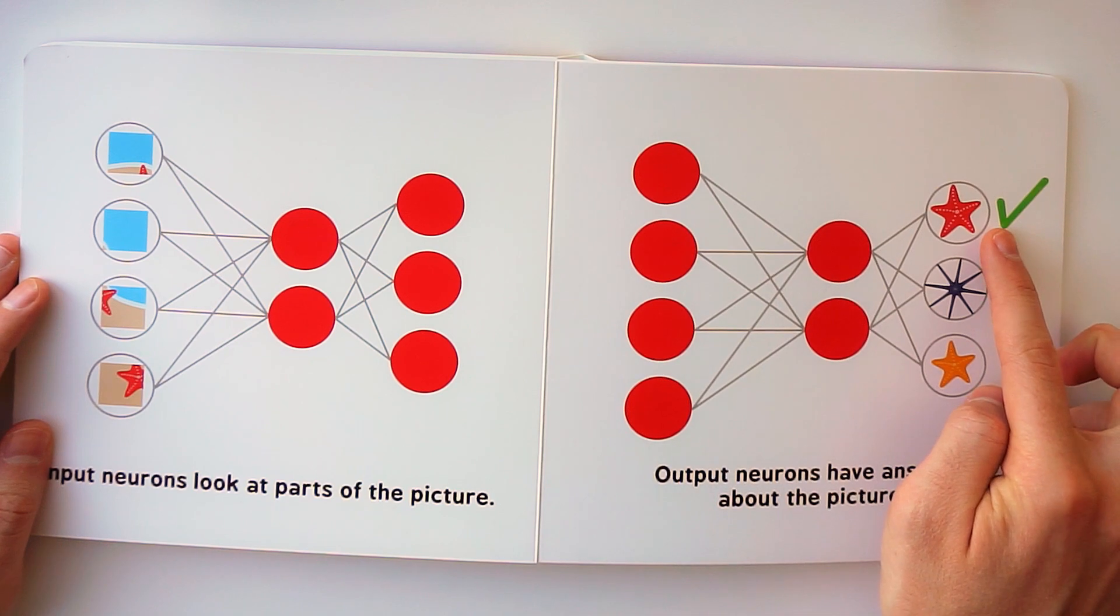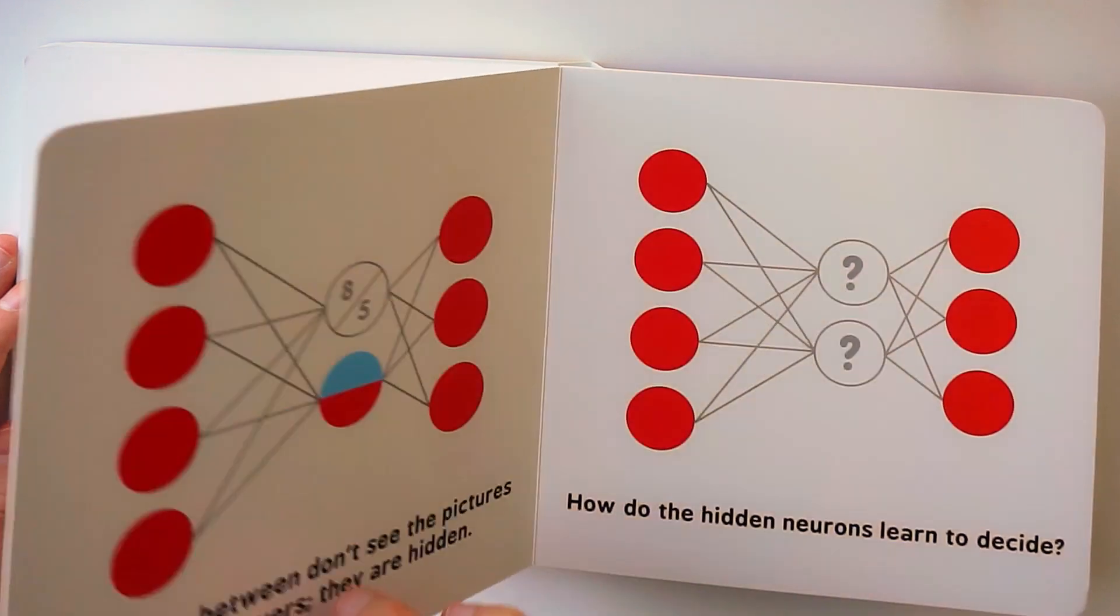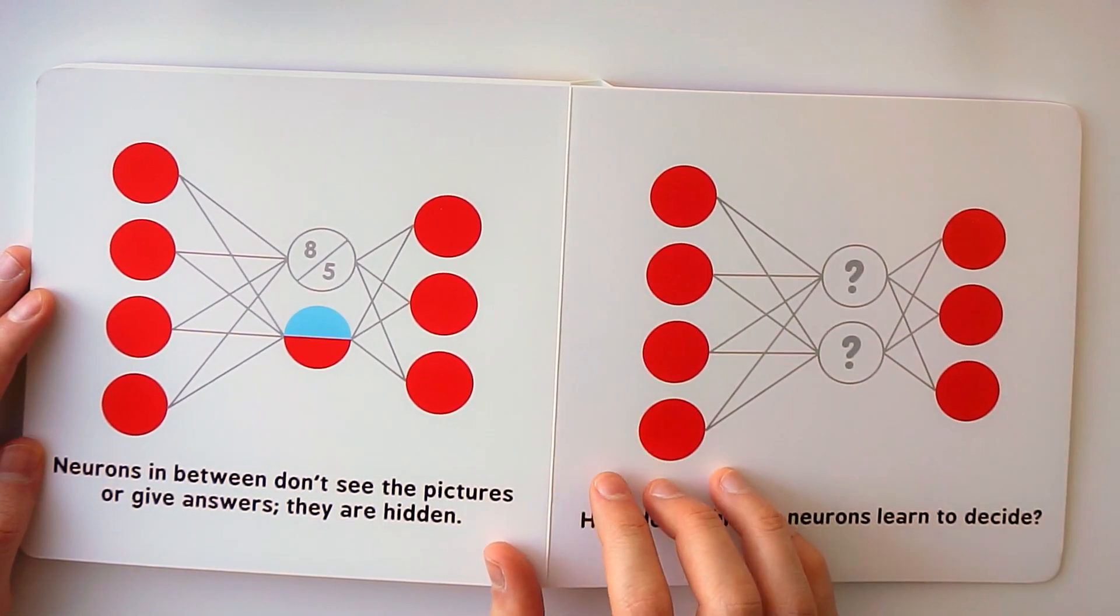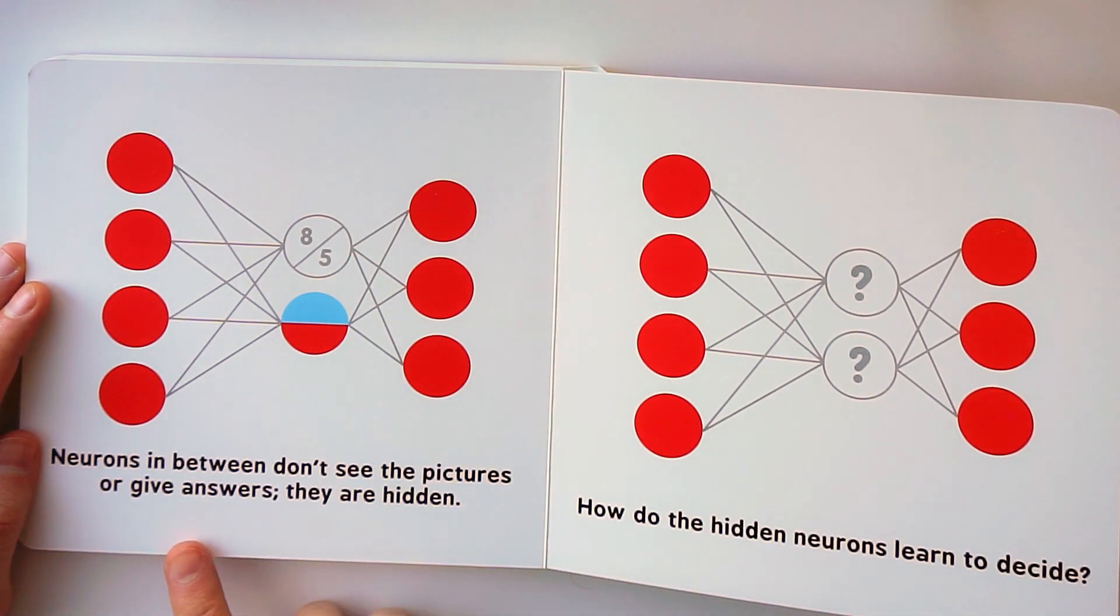Is this a red starfish or blue starfish or yellow starfish? Neurons in between don't see the pictures or give answers. They are hidden.